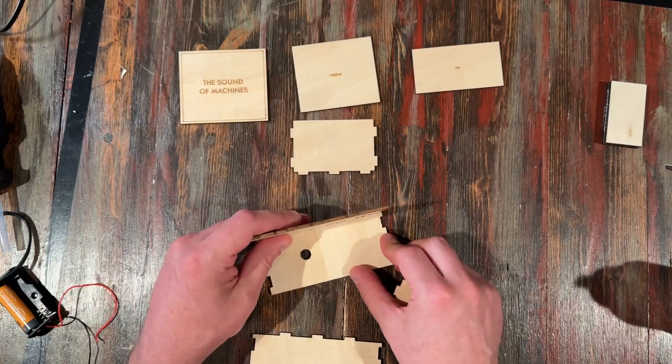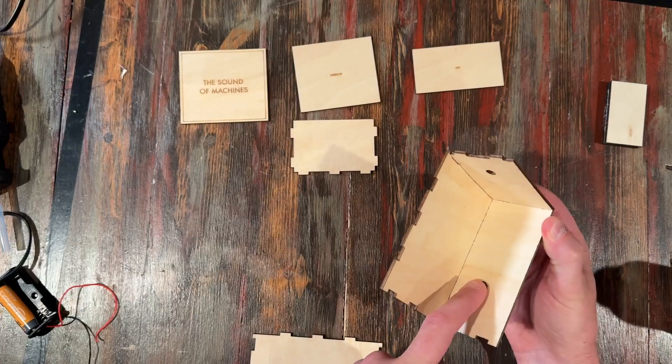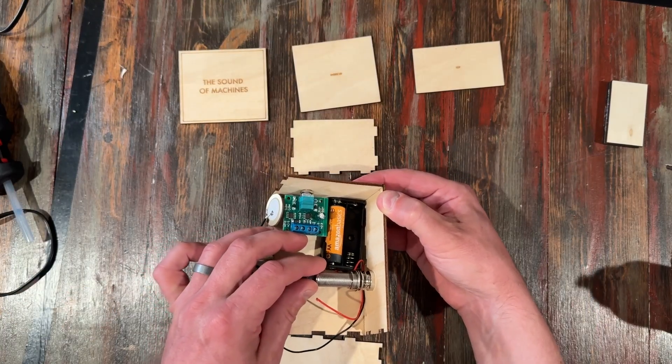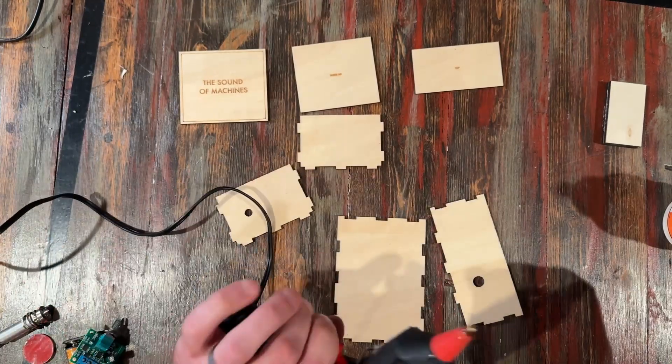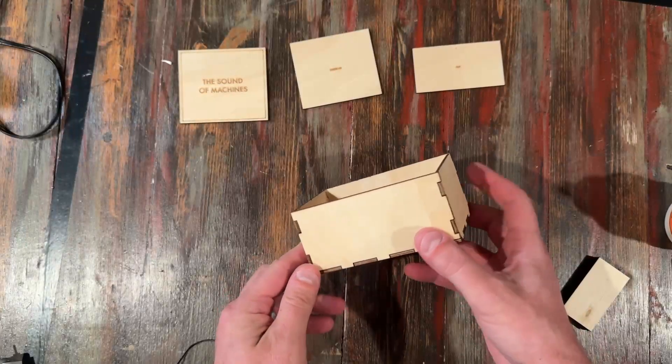So now I'm going to glue all the sides together, and I'm making sure that the output hole is towards the rear of the box, otherwise it won't have room to clear the motor control circuit board. And for this lightweight box, hot glue is a fast drying option for construction, and that's what I used.